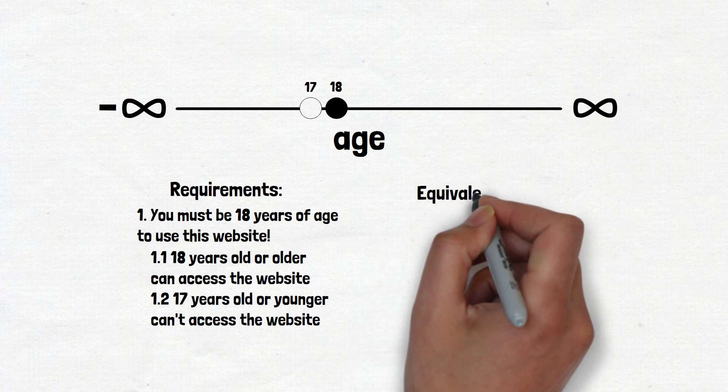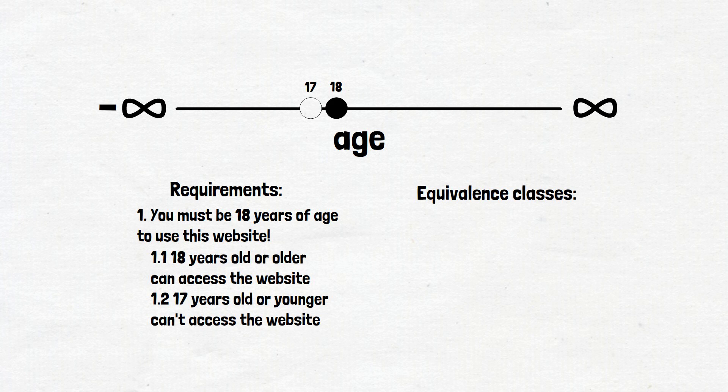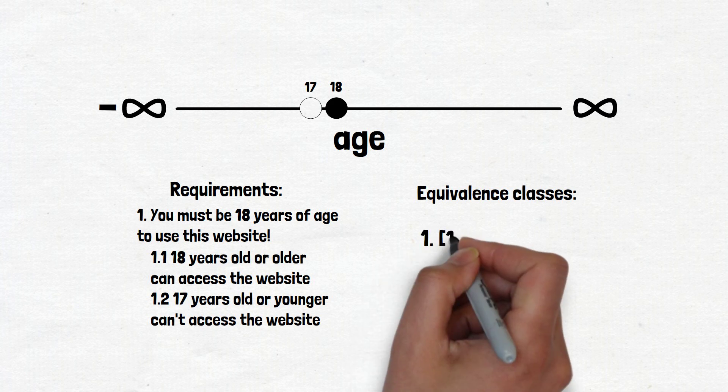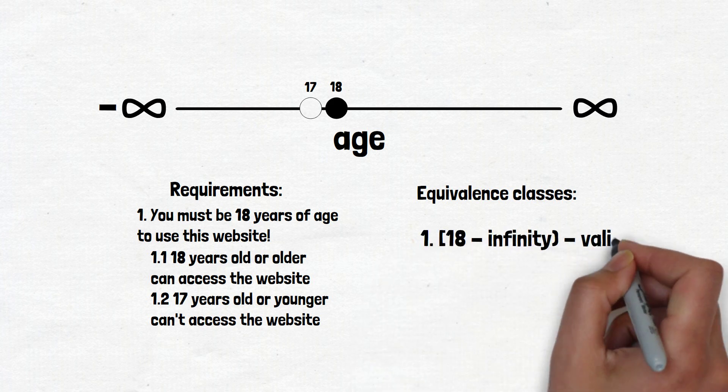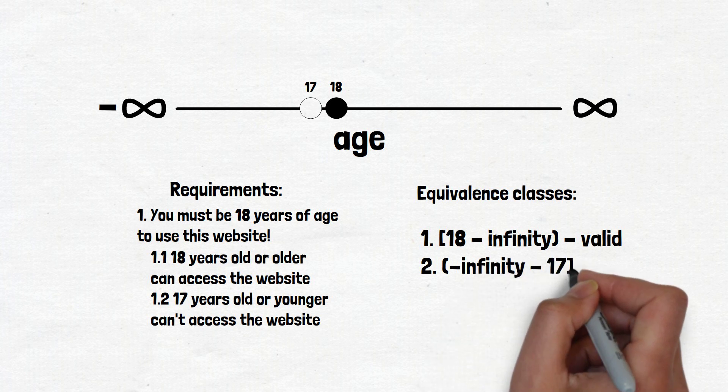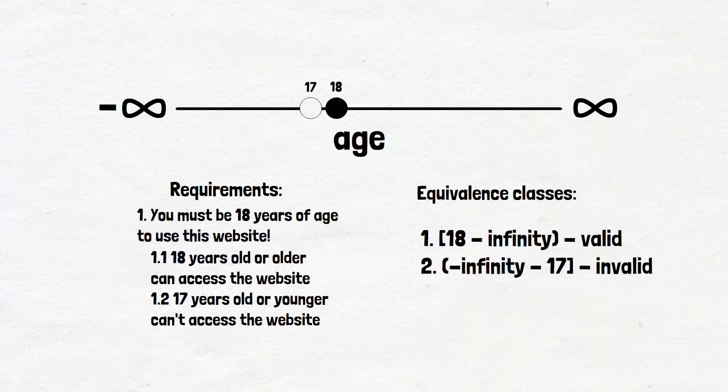And now we have two equivalence partitions. The first one is from 18 years old included, till plus infinity. And the second one is from 17 years old, including till minus infinity. And this can't be right. We can't imagine that somebody is 1000 years old or minus 10 years old trying to use the website.